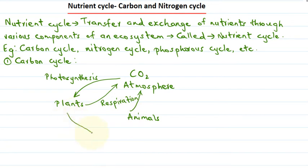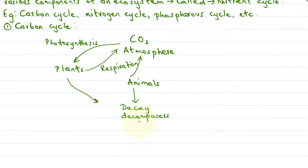Further, these plants as well as animals, when they die, they undergo decay by decomposers. By the decomposers, they undergo decay and this further leads to the formation of fossil fuels like coal, oil, and natural gas. These are the fossil fuels, and they then form the source of energy.